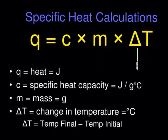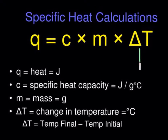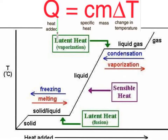ΔT is our change in temperature. It may directly state the change in temperature, or it may give you two temperatures — for example, a change from 40 to 65 degrees would be a change of 25 degrees. When given two temperatures, you subtract the difference between the two to get your change in temperature. Again, Q = mcΔT is our formula for specific heat.